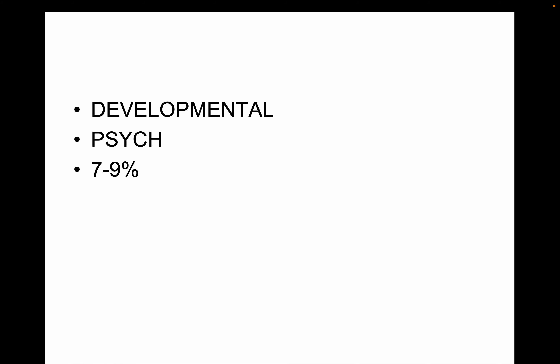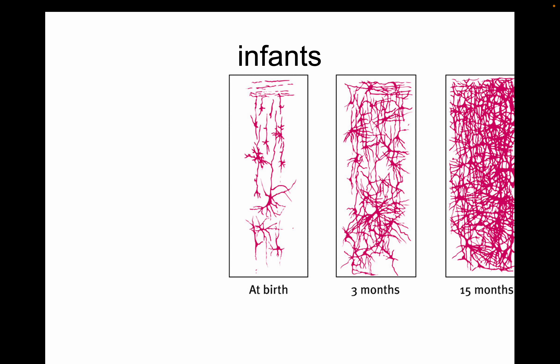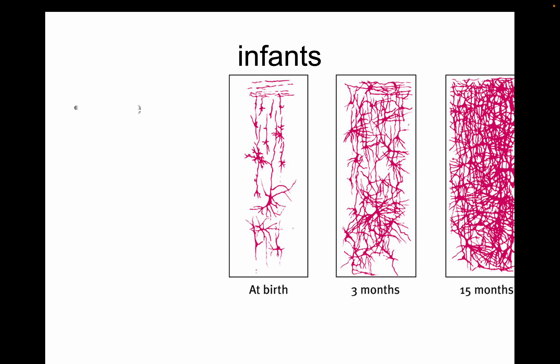Developmental psychology is seven to nine percent of the test — it's a big chunk. The chapter's long but let's hit the highlights. First big thing to be aware of: maturation. Development happens as we go through life. Maturation is physical — things like puberty — not learning.